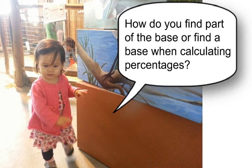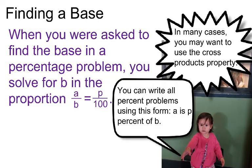How do you find part of the base or find a base when calculating percentages? Well, when finding the base, you're asked to find the base in a percentage problem. You can solve for the B in the proportion. In this case, A over B equals a percent of 100, or P over 100 for our variable.